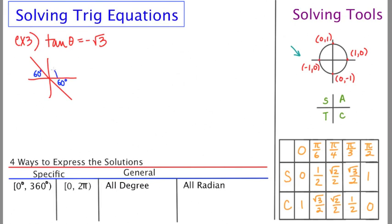So the first answer is going to be 120 and the second answer is going to be 300. And if the question had wanted us to find the specific degree solutions between 0 and 360, the answers would be 120 and 300 and we'd be done.